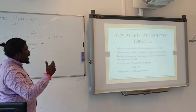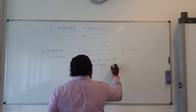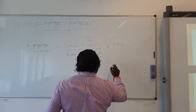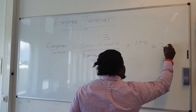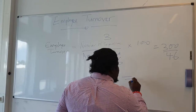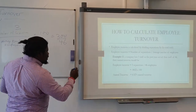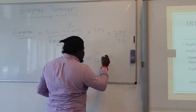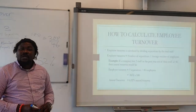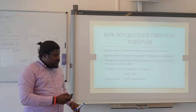We have three separations over a total staff of 46. So mathematically: 3 × 100 = 300, then 300 ÷ 46. If you calculate that, you get 6.52%. So the annual employee turnover in this example is approximately 6.52%. Please review this part of the lecture again to make sure you understand it.